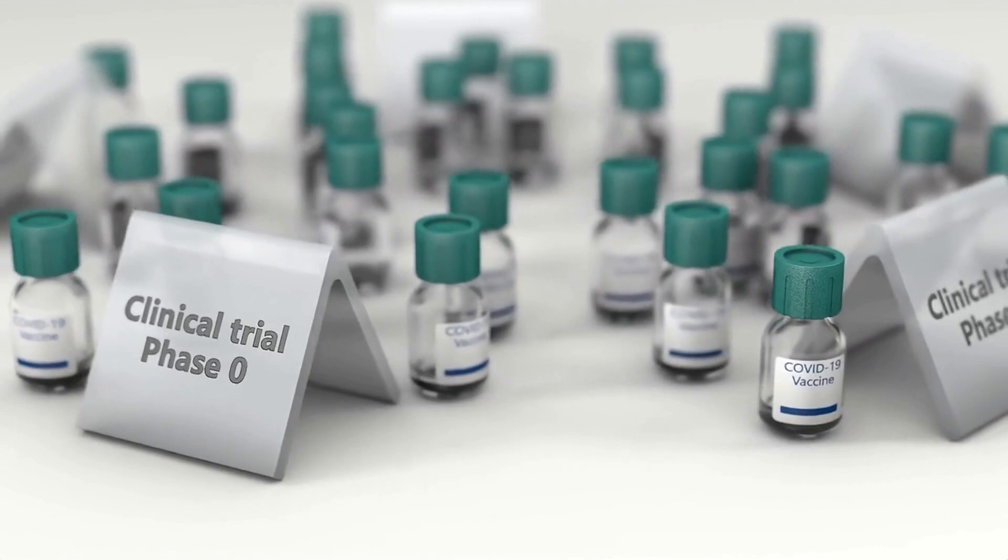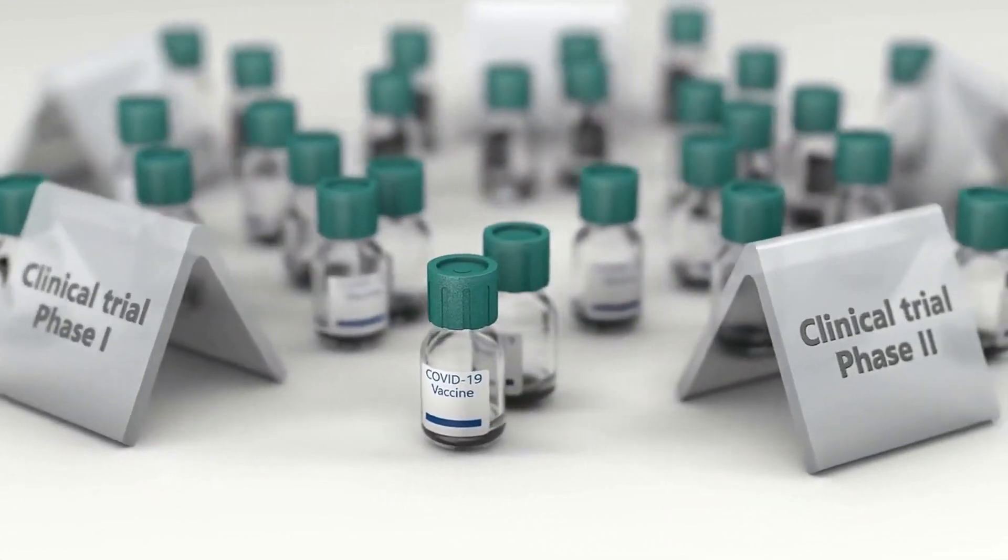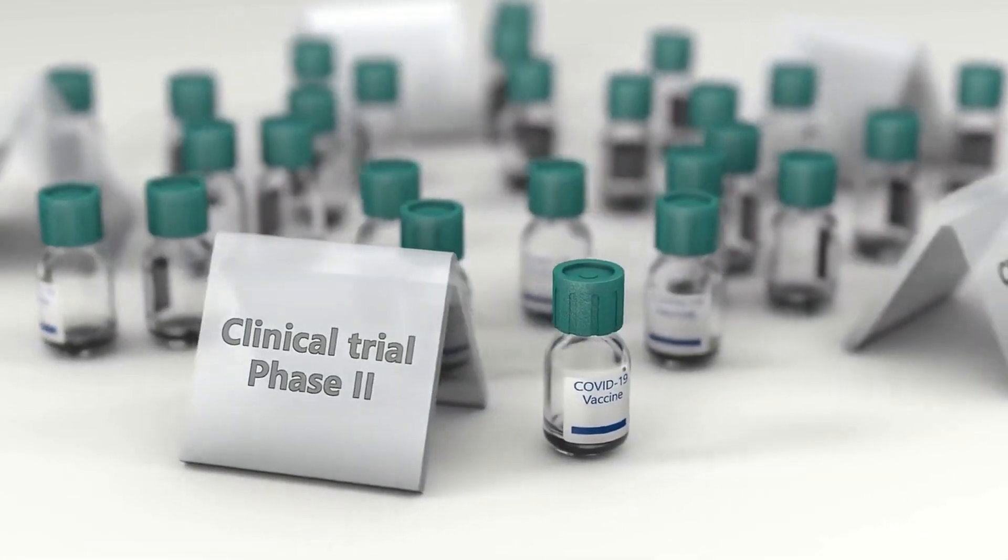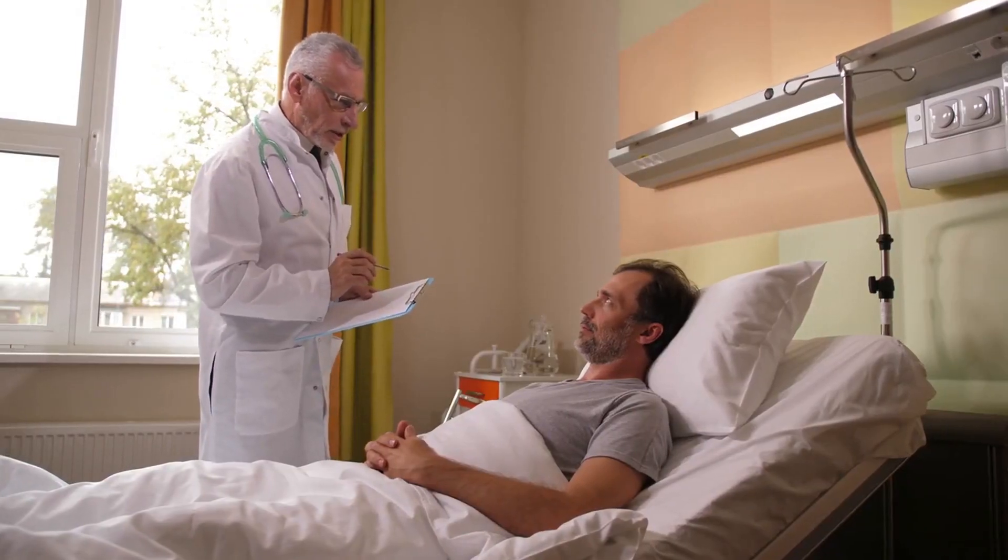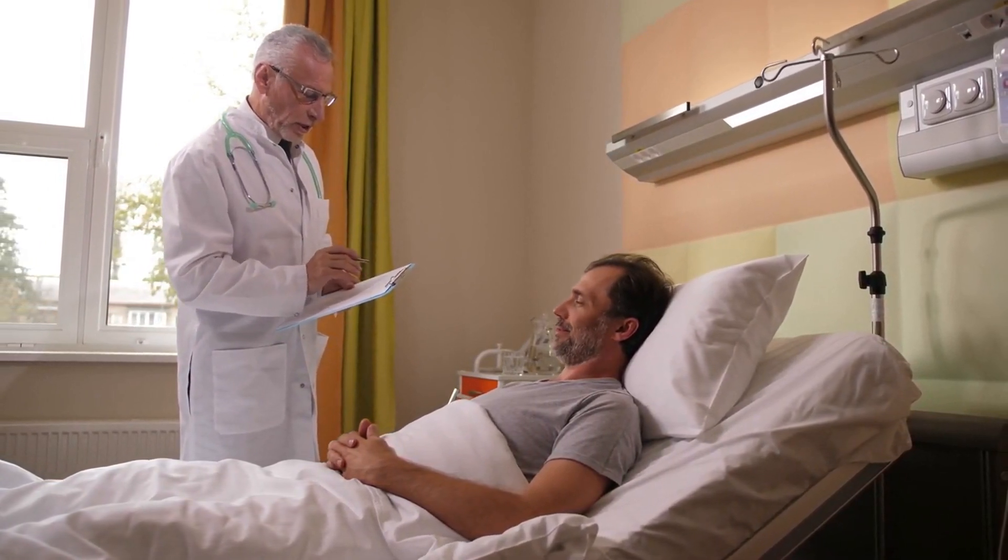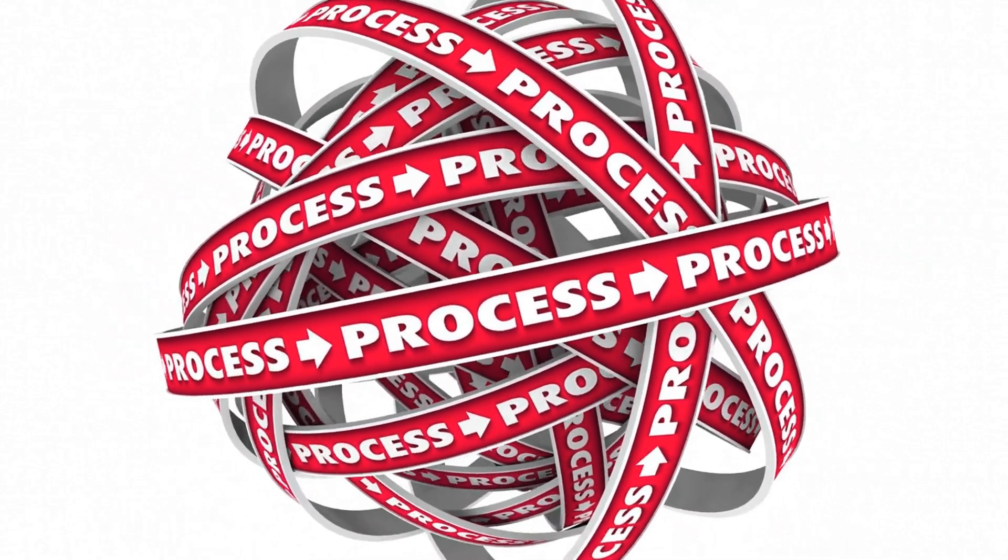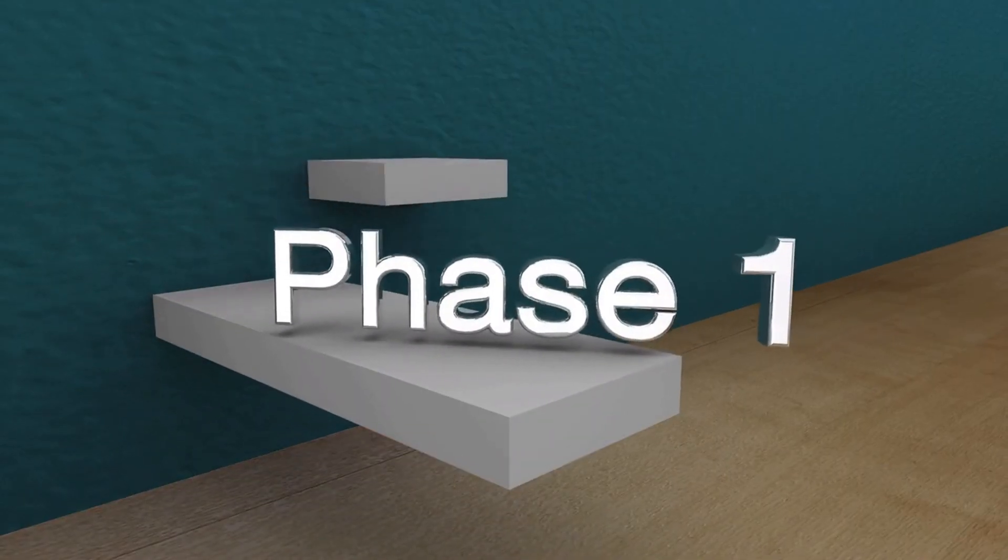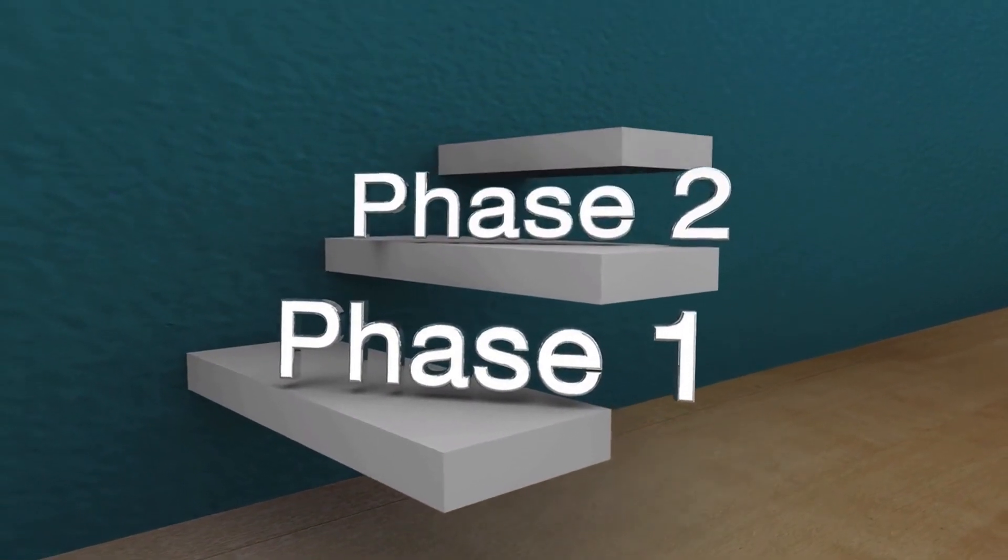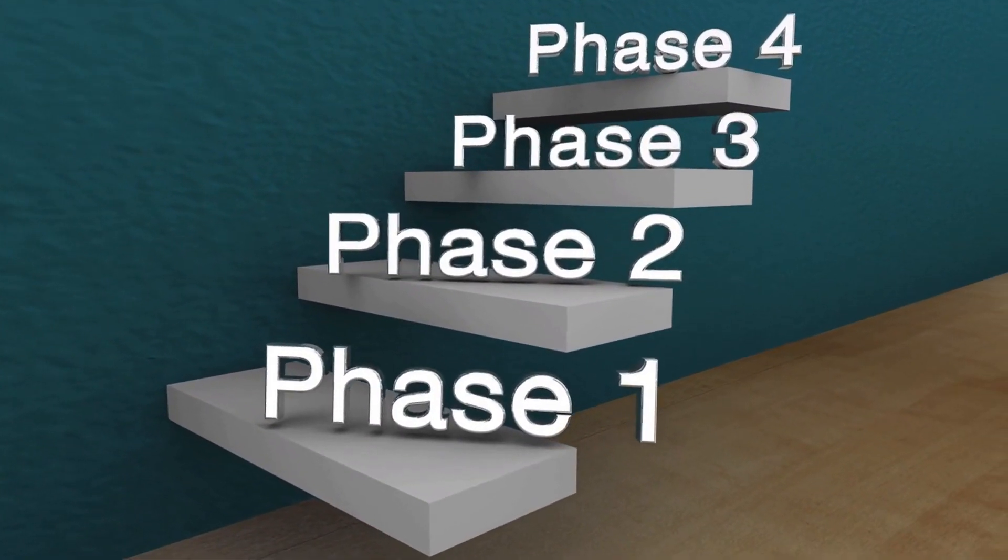Patients who have undergone stem cell therapy have shown improvements in kidney function and have been able to reduce their reliance on dialysis. One patient says: Before undergoing stem cell therapy, I was on dialysis three times a week. It was a very difficult and time-consuming process, and it was taking a toll on my body. Since undergoing stem cell therapy, I have seen a significant improvement in my kidney function, and I am now only undergoing dialysis once a week.